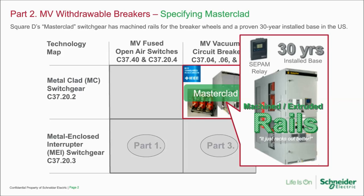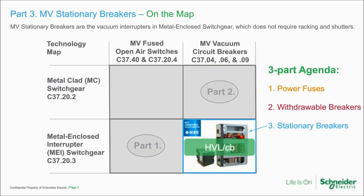We're going to move into part three. Again, the same format. Here's our map. We talked about fuses and metal enclosed switchgear in part one — that's HVL. We talked about breakers and metal clad switchgear in part two — that's Masterclad. Now I want to tell you about the new generation of switchgear: stationary breakers. There are a lot of misnomers because of the word 'stationary' — it sounds like it's stuck. If it's stationary, how do we interrupt the current to do maintenance? Let's dive right in and talk about it.